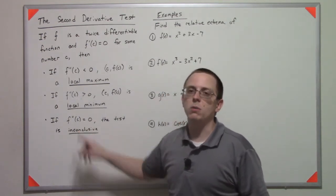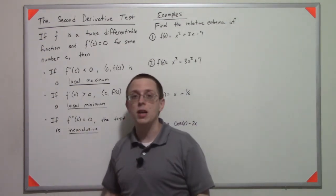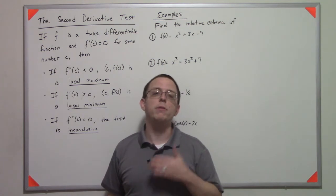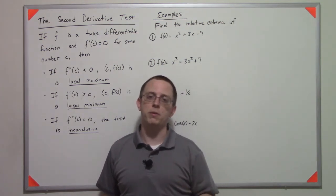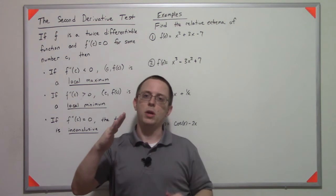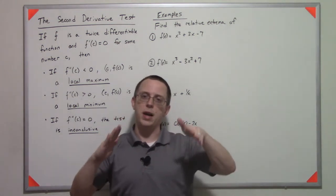Now if the second derivative is equal to zero, you're kind of out of luck. The test is considered inconclusive. That means you have to fall back to the original first derivative test where you analyze the first derivative both to the left and to the right of the point.